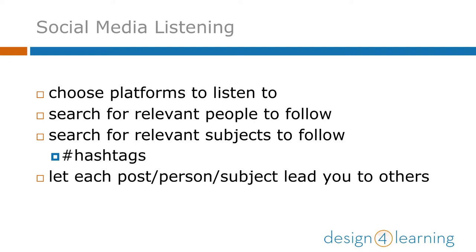You can also search for relevant subjects to follow. Most social media platforms have their own search engines, not unlike what you'd use for any other kind of research. You can start searching for different keywords, or in some platforms these are referred to as hashtags, when the pound sign, called a hash, precedes the keyword so people can quickly include keyword tags in their posts for others to find later.